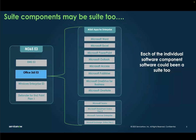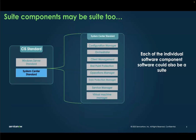These suite components can themselves be a suite too. A good example is M365E3, which includes Office 365E3, and Office 365E3 is itself a suite for M365 Apps for Enterprise, Microsoft Teams, SharePoint Online, Yammer, etc. So these individual software components can also be a suite in their own right. A similar example is System Center, which is a combination of Configuration Manager, Orchestrator, Client Management, and so on.